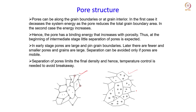In the second case, where pores are primarily located in the grain interiors, it will lead to an increase in the energy of the system. Therefore the pore has a binding energy that increases with porosity. At the beginning of the intermediate stage there is little separation of pores - in the early stage pores are actually larger and pin the grain boundaries. Later there are fewer and smaller pores as more pore filling happens, and the grains are larger during the final stage. A separation can be avoided only if pores are mobile.